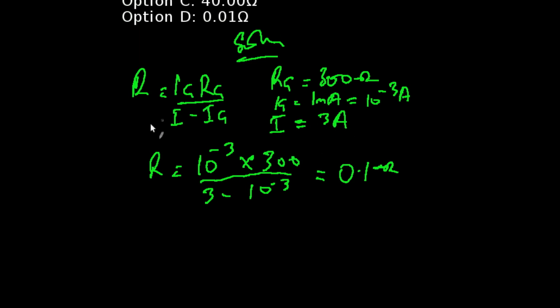We're going to be using the formula: resistance equals IG multiplied by RG all over I minus IG. So when we substitute these values in the formula, we're going to be having 10 raised to the power minus 3 times 300 divided by 3 minus 10 raised to the power minus 3.